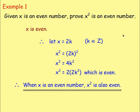For this example: given x is an even number, prove x squared is an even number. Since x is even, it's always in the 2 times table, so let x = 2k, where k belongs to Z. Then x² = (2k)² = 4k². Taking out 2 as a common factor gives 2(2k²). Since we have 2 times something, that's always an even number. So this proves that x squared is also even.